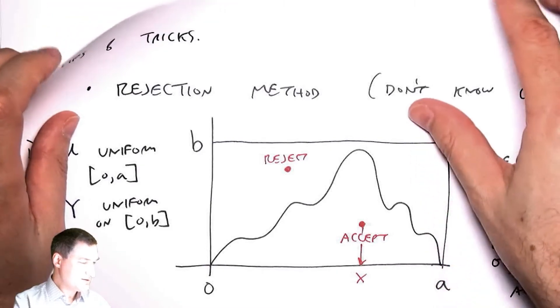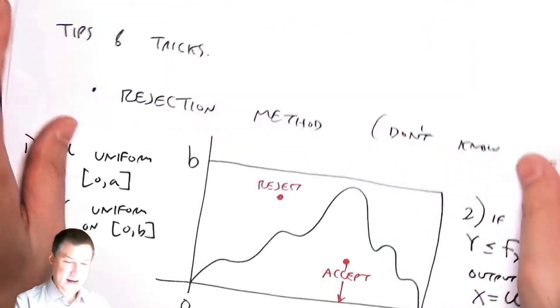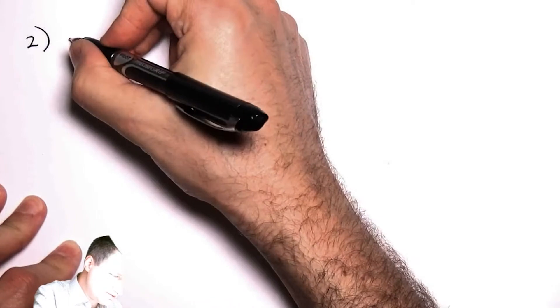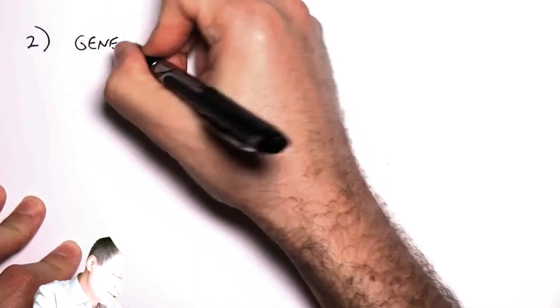The next one I want to talk about is some specific trick to generating Gaussian random numbers. We know that the Gaussian is one of those that has a PDF and CDF that are a pain. So the second one is generating Gaussians.